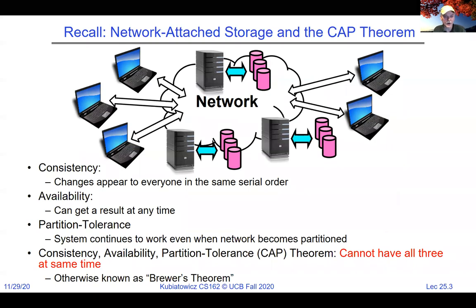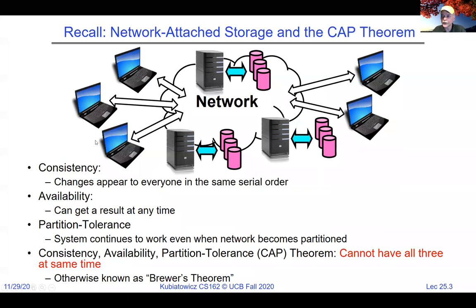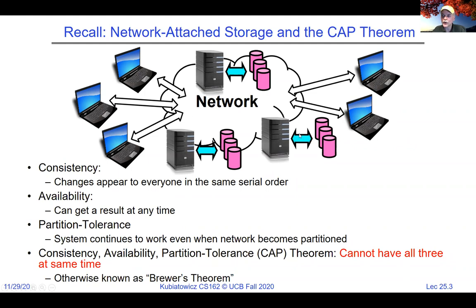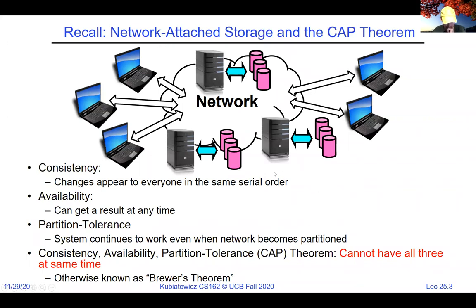We also talked about the CAP theorem — the Consistency, Availability, Partition Tolerance theorem — which was originally a conjecture by Eric Brewer in the early 2000s but has since been proved. The basic idea is you can have two out of these three but not all three. Consistency means everyone sees changes uniformly; availability means you can always access the file system; partition tolerance means the network can survive being cut in half.